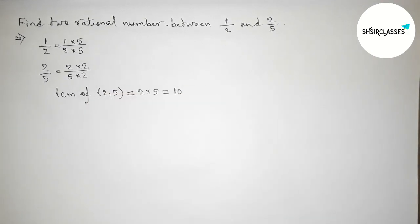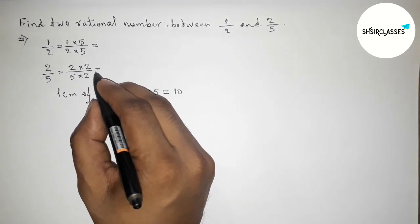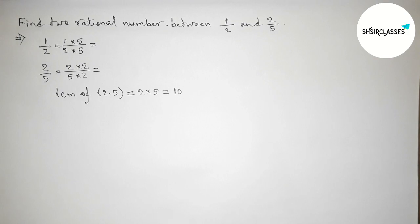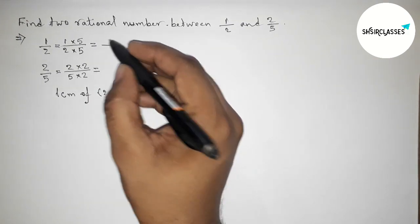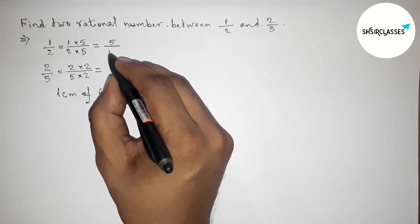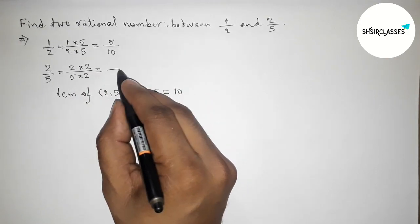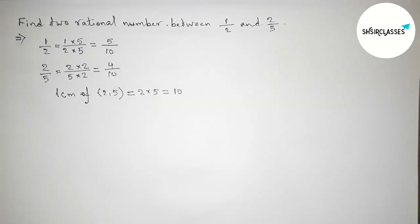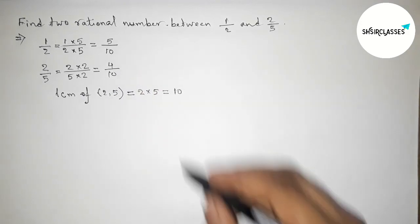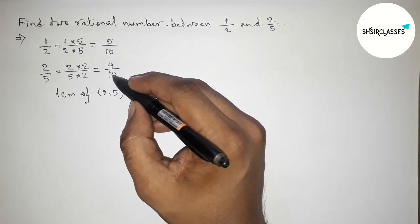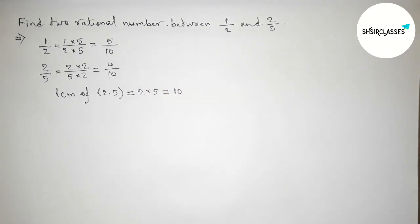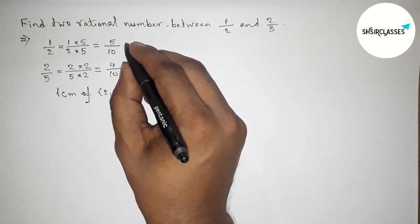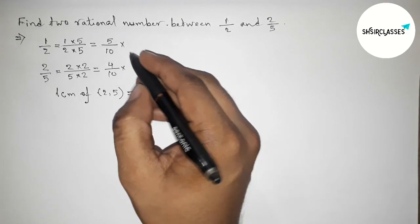So now this is 5 by 10, and here this is 4 by 10. So here both the denominators are 10 and equal or same. Now we have to find two rational numbers between 1 by 2 and 2 by 5.